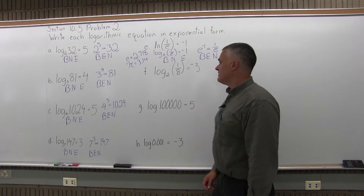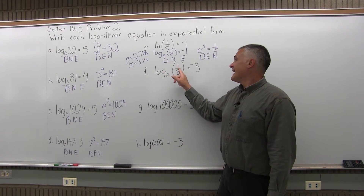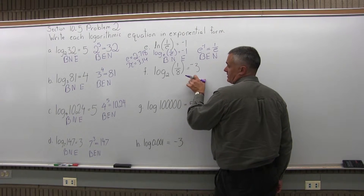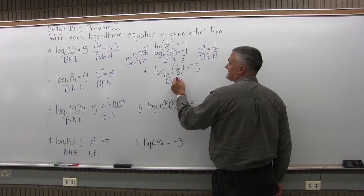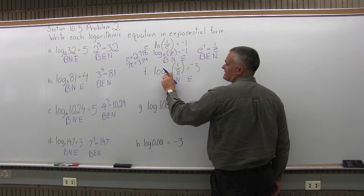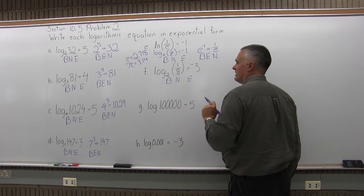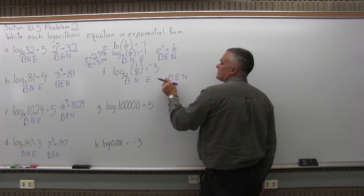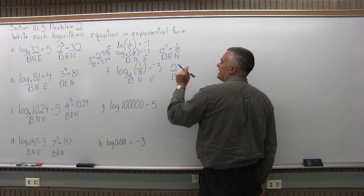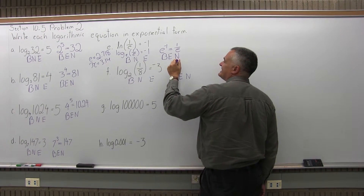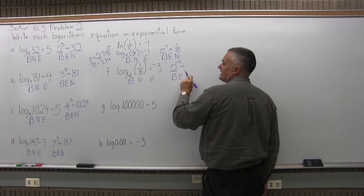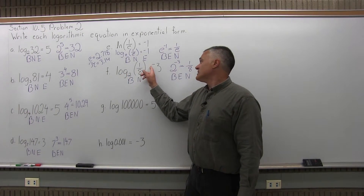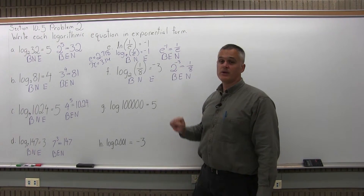Part F says write log base 2 of 1/8 equals negative 3 in its exponential form. Beneath log base 2 of 1/8 equals negative 3, I write BNE — base, number, exponent. The base is 2, the number is 1/8, and the exponent is negative 3. Don't lose track of the negative. Writing BEN for the exponential form: base is 2, exponent is negative 3, then equals, then the number 1/8. So log base 2 of 1/8 equals negative 3 is the same as saying 2 to the negative 3 power equals 1/8.